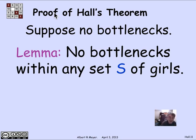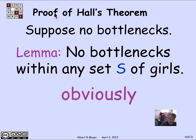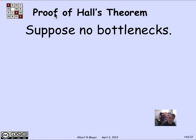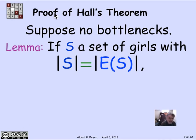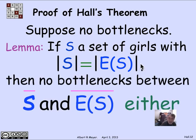Suppose there are no bottlenecks in bipartite graph H. In particular, if you restrict yourself to some set S of girls, no subset of S will have a bottleneck, since a bottleneck within S would be a bottleneck in the whole graph. What's not trivial is the following: suppose you have a set S of girls where the number of boys compatible with S is exactly the same as the number of girls — that is, |S| = |E(S)|. In that case, we can argue there aren't any bottlenecks within the complement of S and the complement of E(S) either.